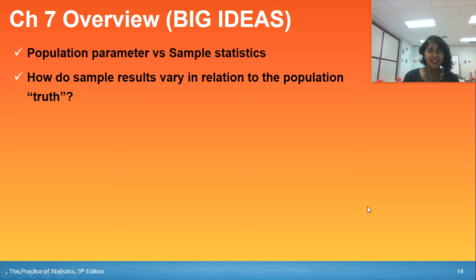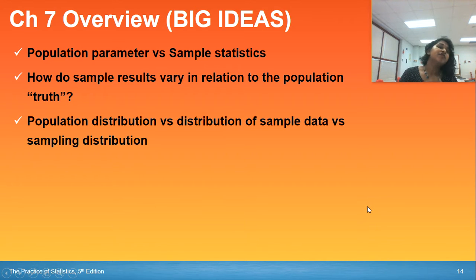If our sampling distribution says whoa about our population truth, we would stop and say, hey, maybe the original proportion value or population parameter was wrong to begin with. So we also know the distinction between these three phrases: population distribution, sample distribution, and sampling distribution.